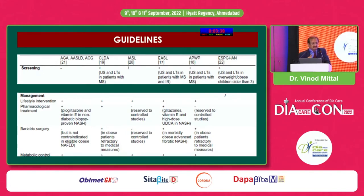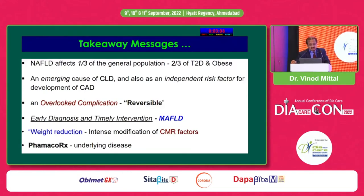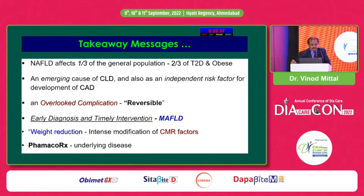Overall guidelines recommend weight reduction as the primary treatment, with bariatric surgery also an option. NAFLD affects nearly one-third of the general population and two-thirds of the obese and diabetic population. It is an emerging cause of chronic liver disease — it has already replaced alcoholic liver disease as a cause of cirrhosis worldwide. It is an independent risk factor for cardiovascular disease. Fatty liver found incidentally on ultrasound should not be ignored — evaluate the patient, identify cardiovascular risk factors, and treat all multiple risk factors. Weight reduction is the most important intervention.